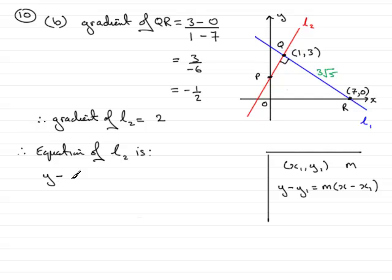Well, it is y minus y1. And y1 is a point on the line. And we can see we're going to use the point Q. So y1 is the 3 equals the gradient, which is 2, multiplied by x minus x1. So x minus x1 and the x1 value is the 1 here.